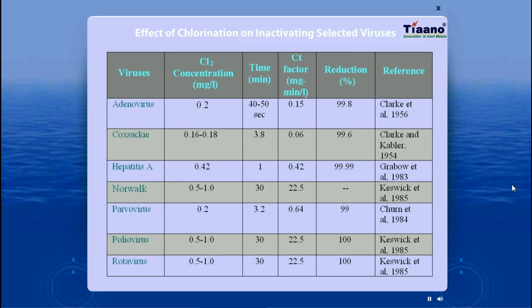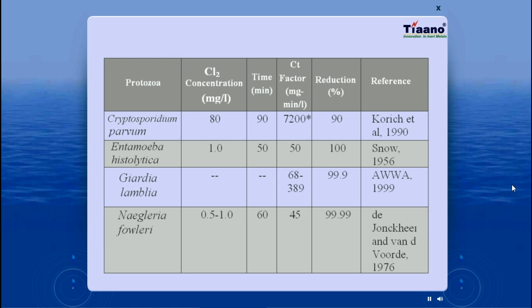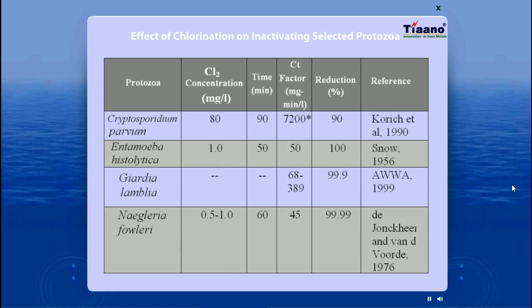This is data regarding the effect of chlorine on inactivating viruses. For example, for Hepatitis virus, which causes jaundice, 0.4 mg of chlorine per liter of water — or 0.4 ppm — in just 1 minute can kill 99.99% of the virus. Protozoa are stronger, and therefore require more chlorine and more time to kill.